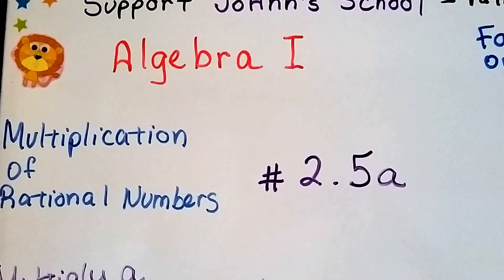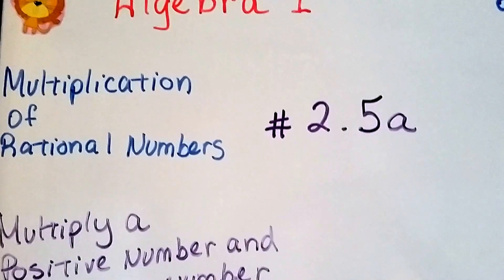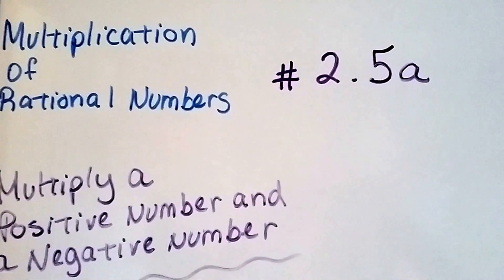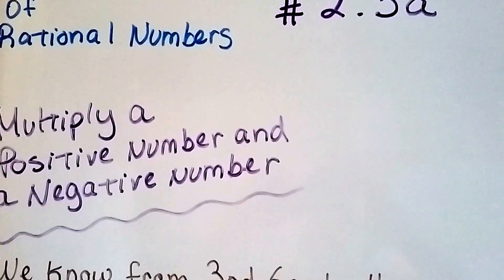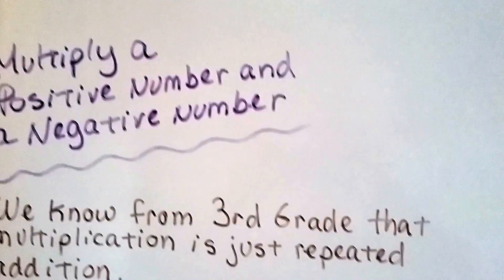Algebra 1, number 2.5a, multiplication of rational numbers. That's this unit, 2.5. I'm going to talk about multiplying a positive number and a negative number in this video.